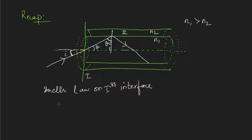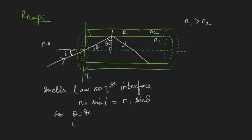Applying Snell's law, with the refractive index outside as n0 (for air, n0 = 1), we get n0 sin(i) = n1 sin(theta). When theta equals the critical angle theta_c, the angle of incidence becomes maximum. So i_max is the maximum angle at which the light can be launched inside the fiber to undergo total internal reflection, and we are finding the condition on i_max.